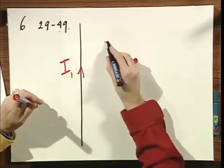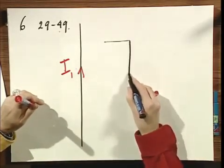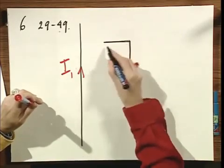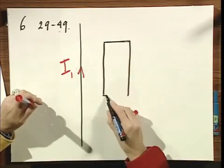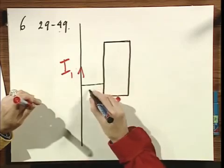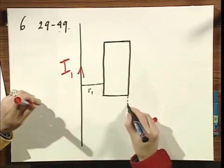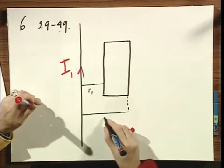And here I have a loop, a rectangular loop, and this distance equals R1, and this distance equals R2.